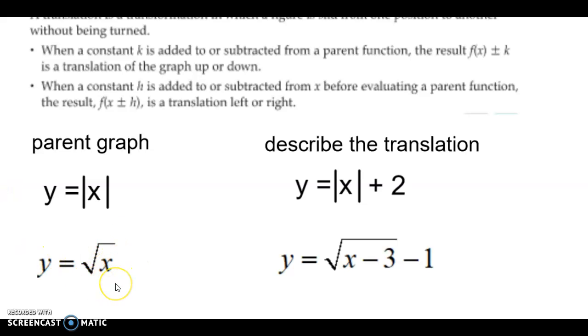This one here is your parent graph. Go to the right of this. In the grouping symbols, you have a minus three. Well, you do the opposite of that sign. So that would be a plus. So that would go up three. And then outside the grouping symbols, you do exactly what it is. So down one. So this one compared to the parent graph would be right three, down one.